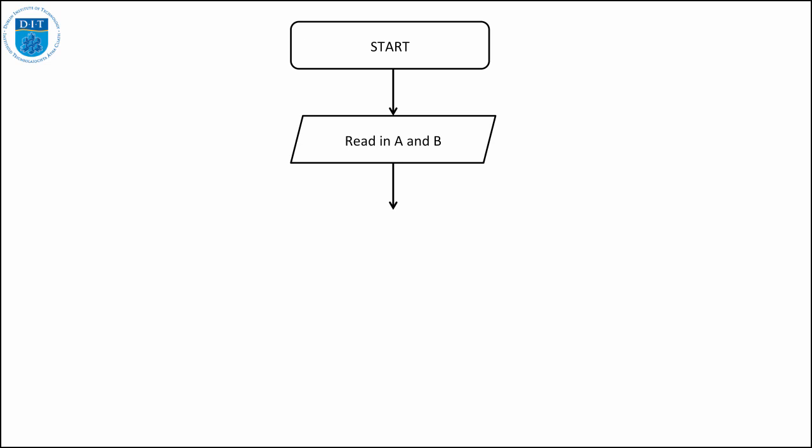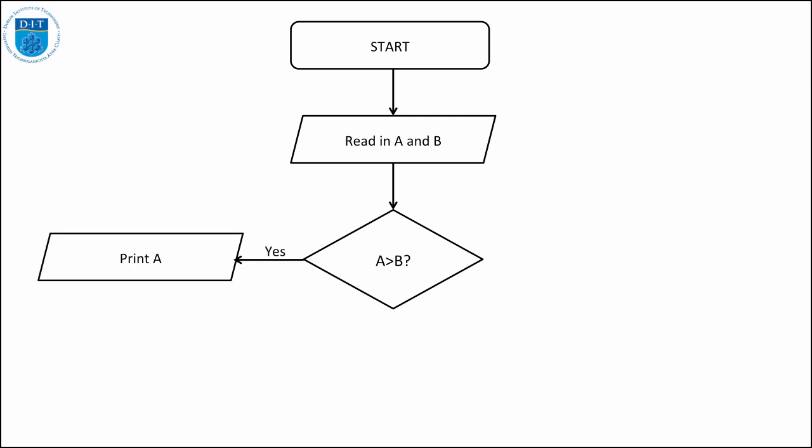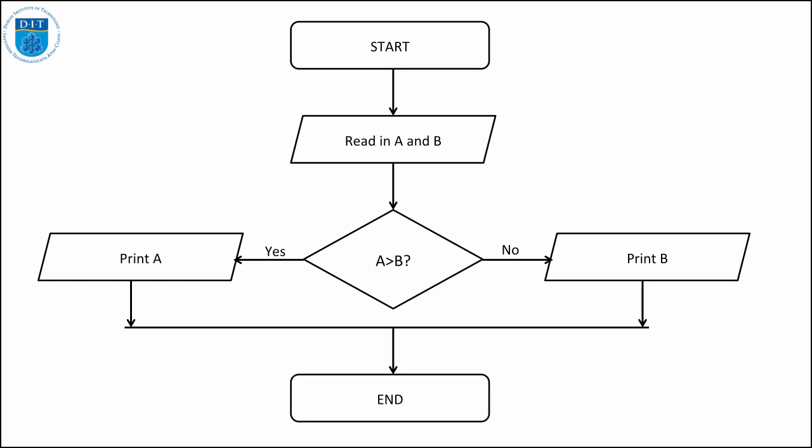If we represent that as a flowchart, we start, read in a and b in a single command, then we have a choice: either a is bigger than b, or b is bigger than or equal to a. If a is bigger than b we print a; otherwise we print b. Then we end. Comparing this flowchart to the odd or even one, although the words in the boxes are different, the shapes are exactly the same — so just by looking at the shape of the flowchart we can see there's an if statement in it, giving you a choice to go left or right, do one or the other, then end.